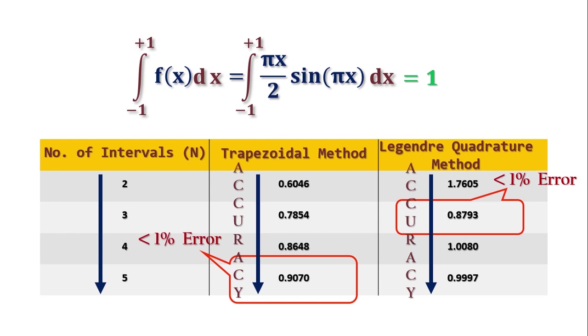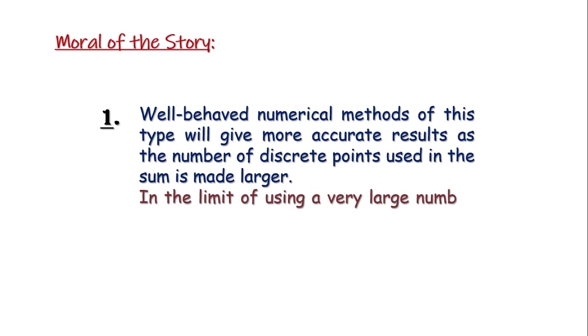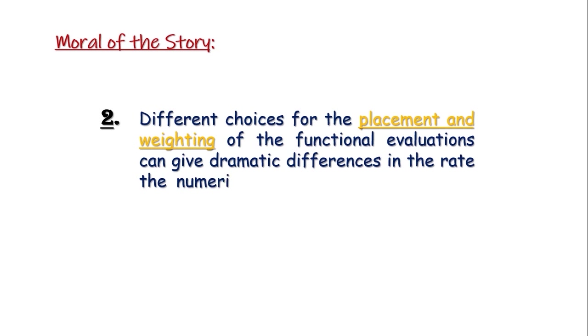The extract that we are taking from here are, well-behaved numerical methods will give more accurate results as the number of intervals or number of discrete points made larger. And, second, different choices for the placement and weighting of the functional evaluations can give dramatic differences at which the numerical methods converge to the exact integral. Keep this in mind.